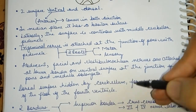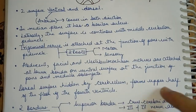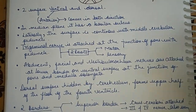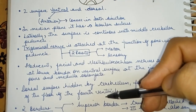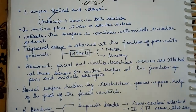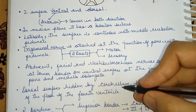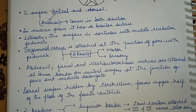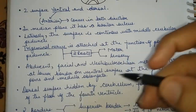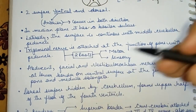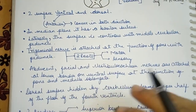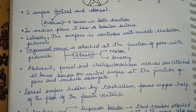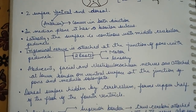The dorsal surface is hidden by the cerebellum and it forms the upper half of the floor of the fourth ventricle, also called the rhomboid fossa. The dorsal surface, being behind, is hidden mainly by the cerebellum. For now, remember that the upper half of the floor of the fourth ventricle — the rhomboid fossa — is formed by your pons.